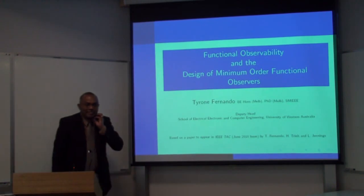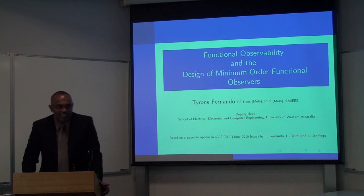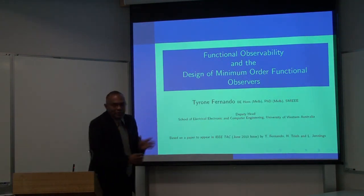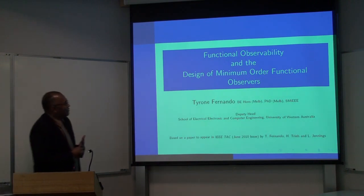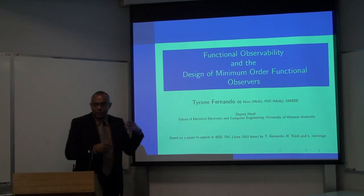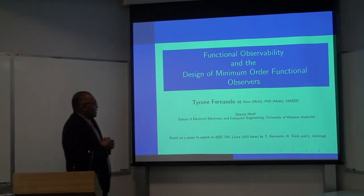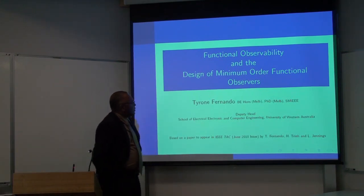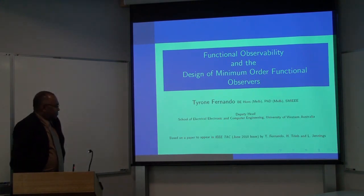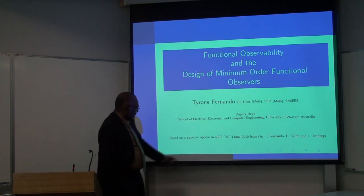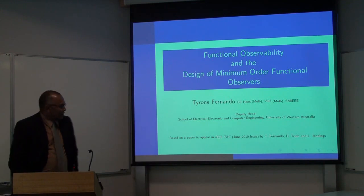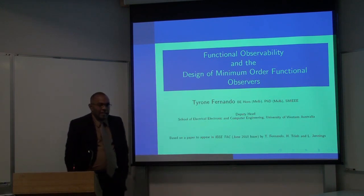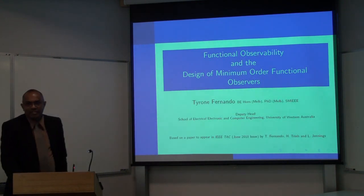I'd first like to thank Professor Ron Anderson for giving me the opportunity to give this presentation to this audience. I want to talk about functional observability, a concept that we introduced, and how we used that concept to solve an open problem in control, referring to the problem of designing minimum order functional observers. The presentation is based on a paper that will appear shortly in IEEE Transactions in Automatic Control, authored by myself, Hugh Trinh from Deakin University, and Les Jennings from the School of Mathematics at UWA.